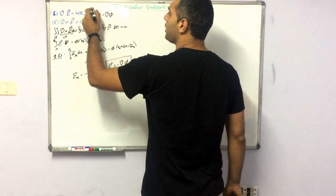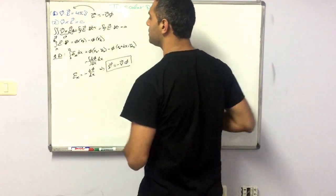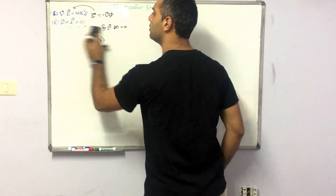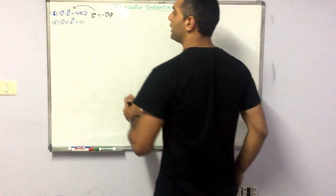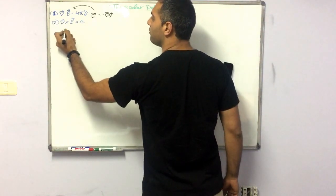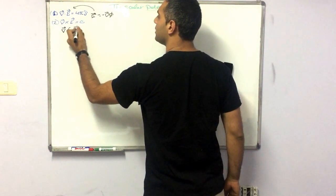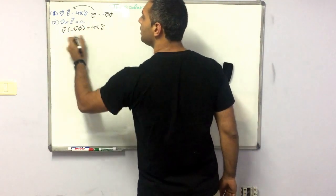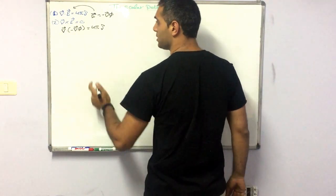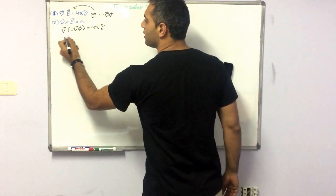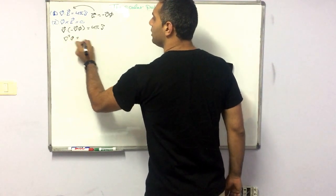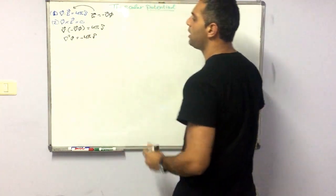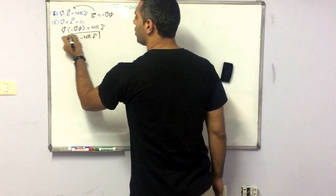And we can substitute this into the first equation. We will get that the divergence of minus gradient φ equals 4π times the charge density. The divergence of the gradient is the Laplacian, and we will get the Laplacian of φ equals minus 4π rho. This equation is the Poisson equation.